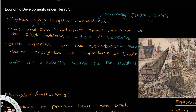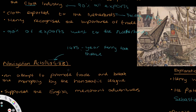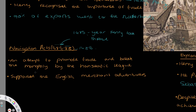We also see exploration and prosperity in terms of the Navigation Acts, which were introduced — the first and second Navigation Acts — released in 1485 and 1486. What's important about those dates is that 1485 was the year Henry took the throne, suggesting that the Navigation Acts and the economy in general were a high priority for Henry, as he dealt with it within his first and second years. The Navigation Acts were an attempt to promote trade and break the monopoly of the Hanseatic League.